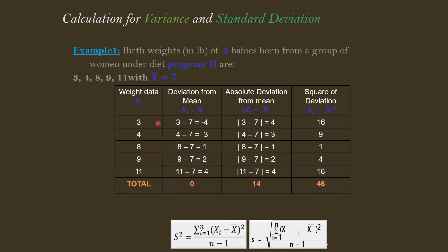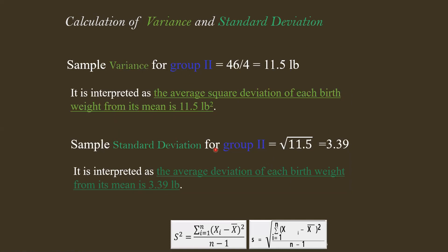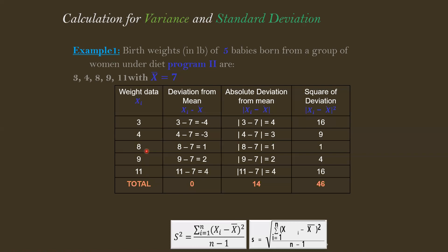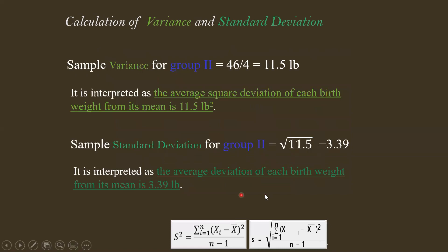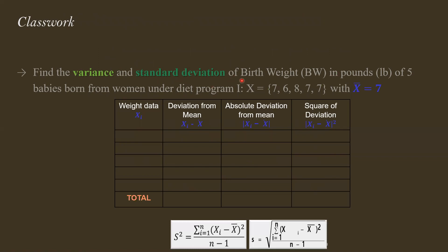So with data values 3, 4, 8, 9, 11, the average deviation of each observation from the mean is 3.39 lb. Now as another example, we have the diet program one data with observations 7, 6, 8, 7, and 7. Using the same method, find the variance and standard deviation for this dataset and give your answer in the comments below.